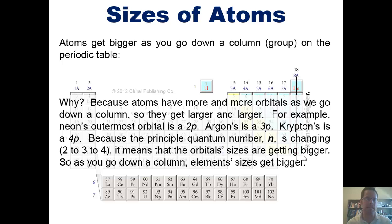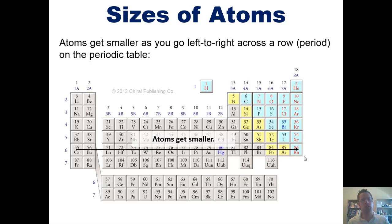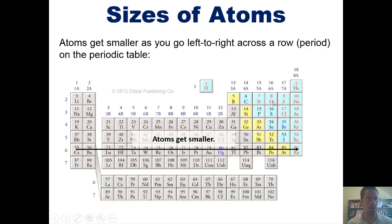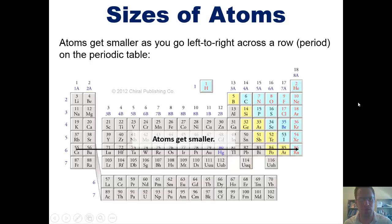Now, this is not as intuitive, but atoms actually get smaller as you go left to right across a row or period. As you go across a row from left to right, you're getting more electrons added to each element. For example, oxygen has one more electron than nitrogen, which has one more than carbon. So you might be tempted to think oxygen should be bigger than nitrogen, and nitrogen bigger than carbon. But it's the exact opposite — oxygen is smaller than nitrogen, which is smaller than carbon, which is smaller than boron.